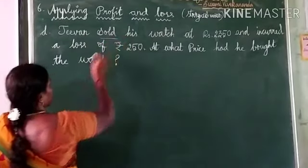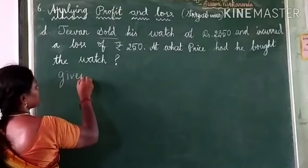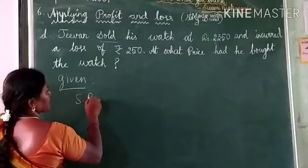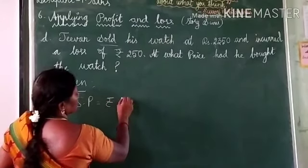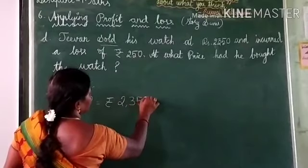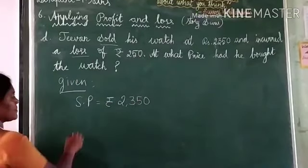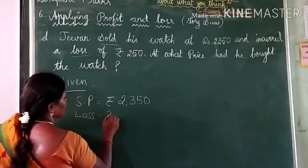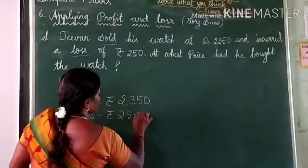So what was given in the question? Sold means selling price. Selling price is rupees 2350. Then he incurred a loss. So loss is rupees 250.